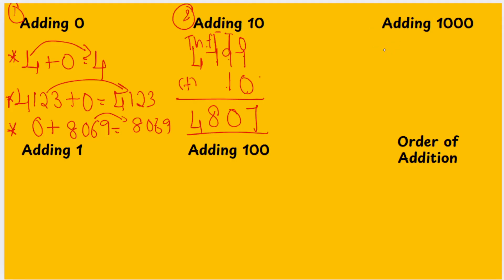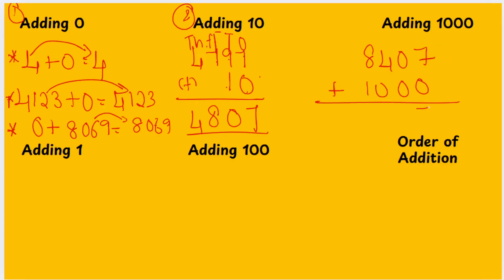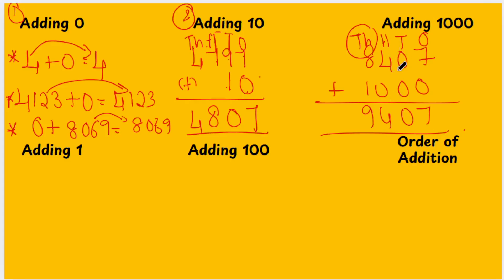What about adding 1000? For example, if you add 8,407 plus 1,000, which number is changed? Only the 1,000s place is changed. So you are going to add only the 1,000s place and write the remaining numbers as they are — there are no changes on the remaining places. In adding 10, which place changes? The 10s place gets changed.